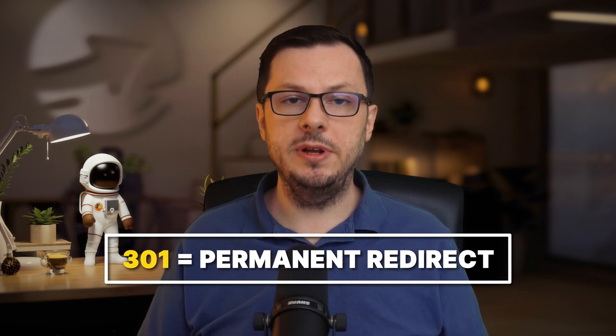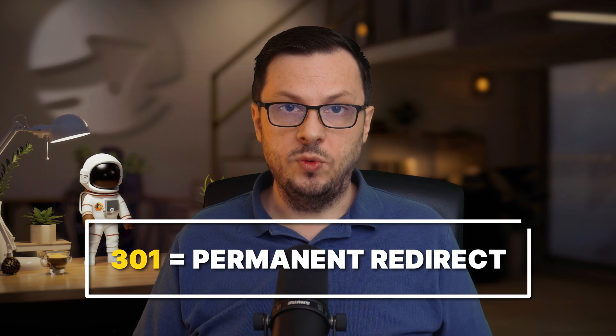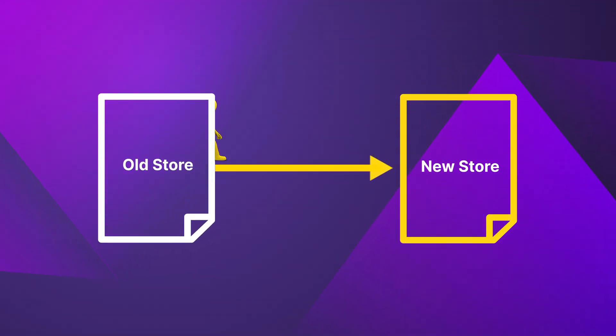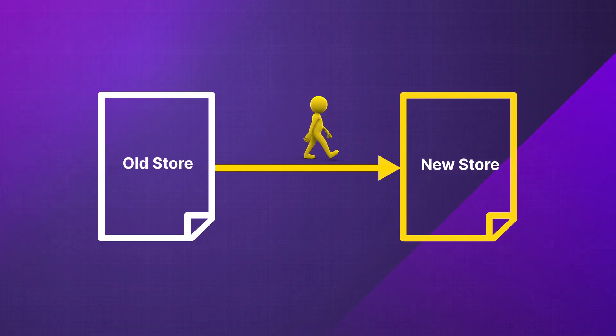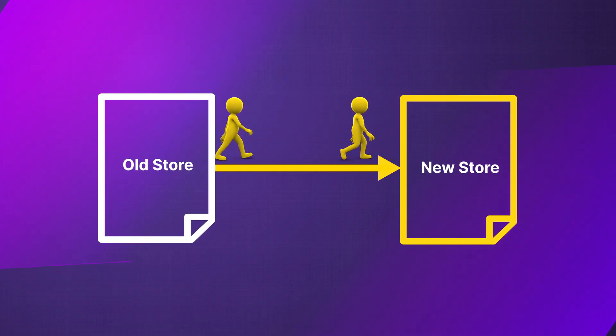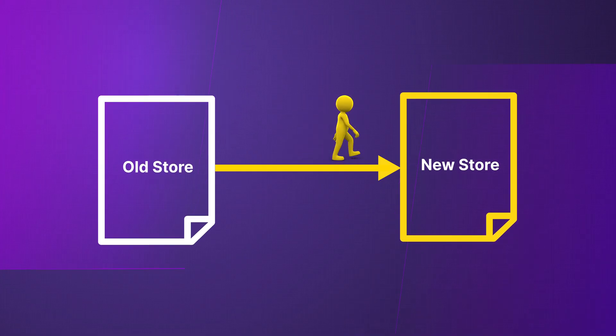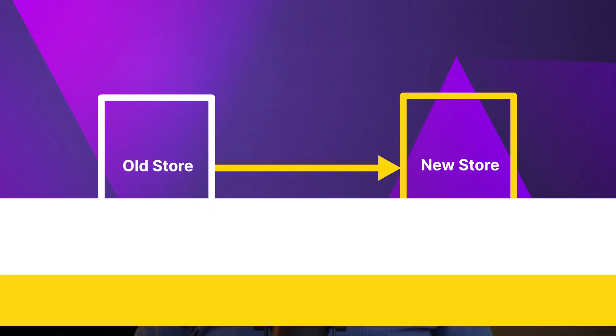There are two main types of redirects you should know about: 301s and 302s. The 301 redirect is a permanent redirect. It's like telling Google this product page has moved for good — like changing your store's address permanently. This helps keep most of your online store's power, or what we call link juice in SEO.